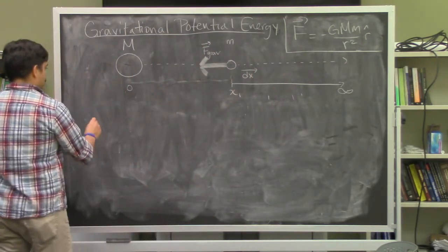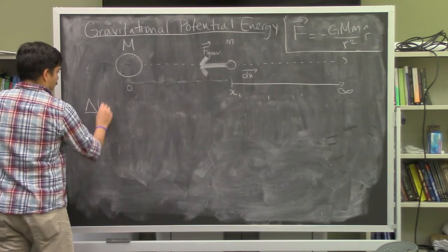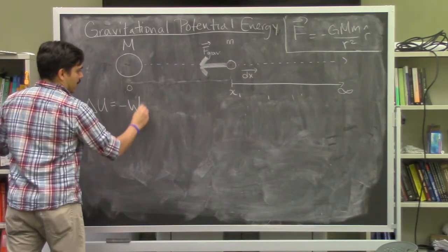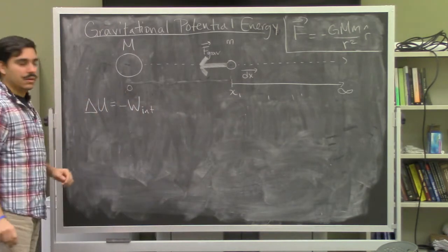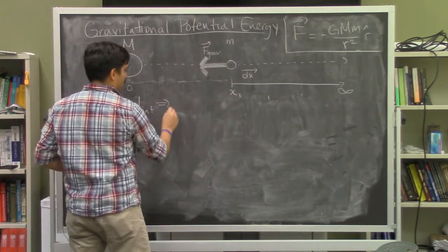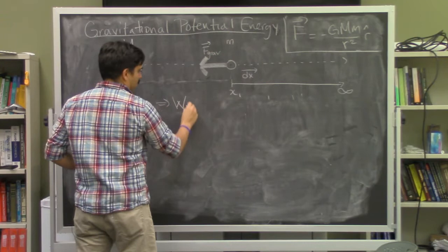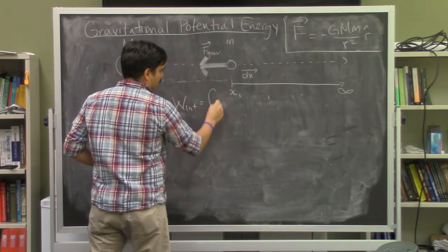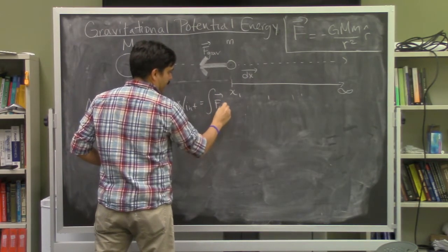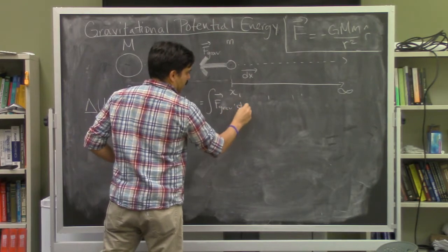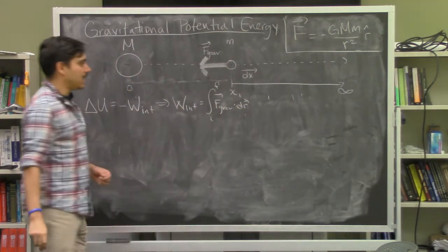We start with the description of potential energy change, which is ΔU = -W_internal. The internal work is the integral of the gravitational force dotted into its displacement from its initial to final location.